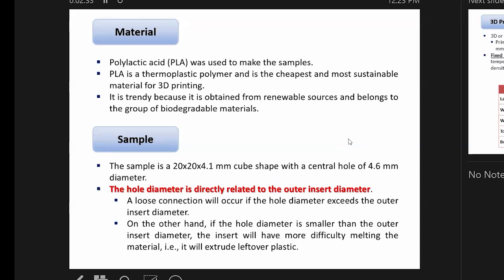In this study, we made cube-shaped samples with a center hole of 4.6 millimeters, which is very important for metal inserts. There is a direct correlation between outer insert diameter and center hole. If the hole is smaller than the outer insert diameter, there is difficulty because the material melts and extrudes load over plastic.